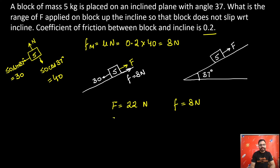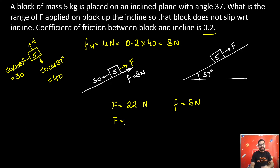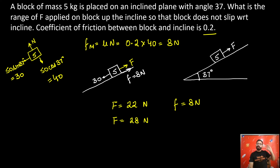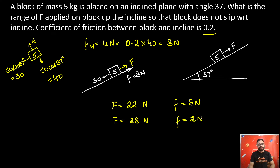Now suppose I increase capital F to 28 newtons. Will the block move upwards? No — friction is a self-adjusting force. The requirement of friction to stop the block is now only 2 newtons, so friction acting up the incline will be just 2 newtons, adjusting itself according to requirement.